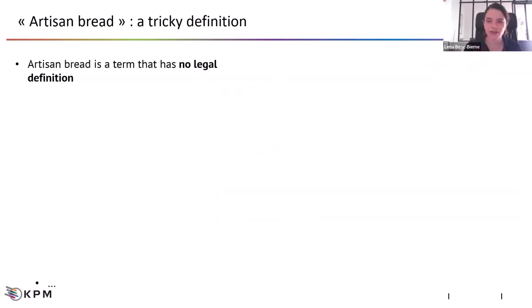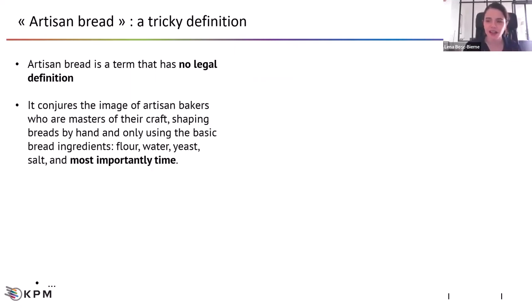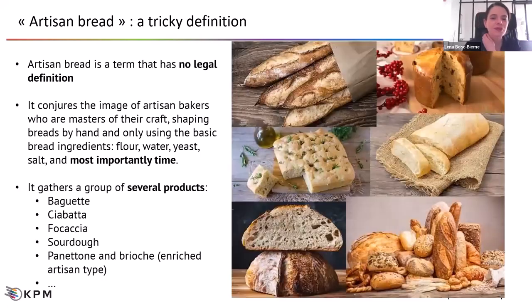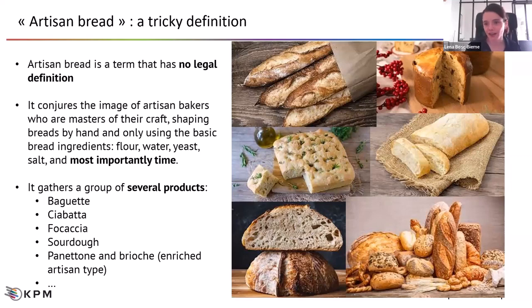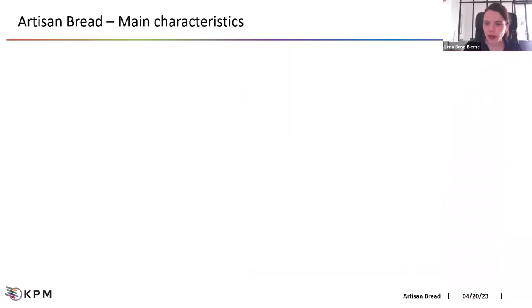But the definition of artisan bread is not so easy — there is no legal definition. You have this image of the artisanal baker, masters of their craft doing the bread by hand and only using very simple ingredients, and most importantly, time. In the end, we are not talking about one specific product. We are talking about a group of various products, such as the French baguette or Italian delicacies such as ciabatta, focaccia, panettone, and also sourdough bread and other types.